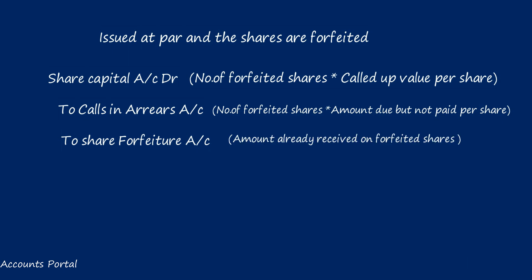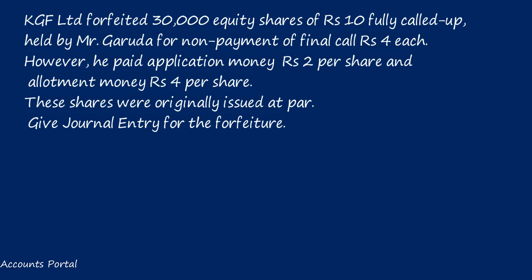Practice sum: KGF Limited forfeited 30,000 equity shares of rupees 10, fully called up, held by Mr. Garuda for non-payment of the final call at rupees 4 per share. However, he paid application money rupees 2 per share and allotment money rupees 4 per share. These shares were originally issued at par. Give the journal entry for the forfeiture.